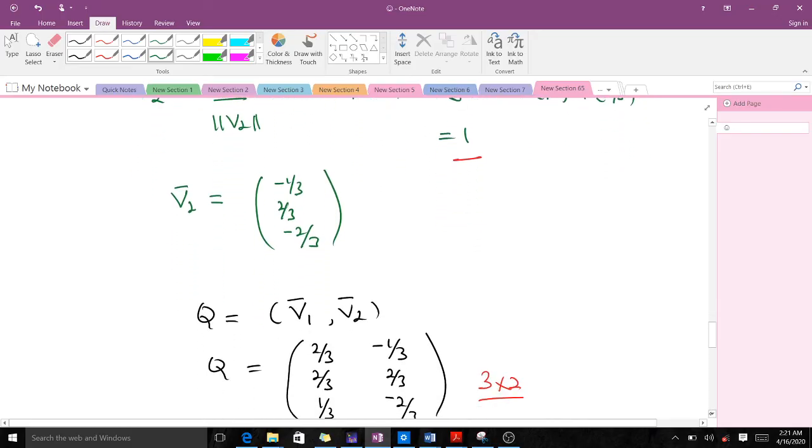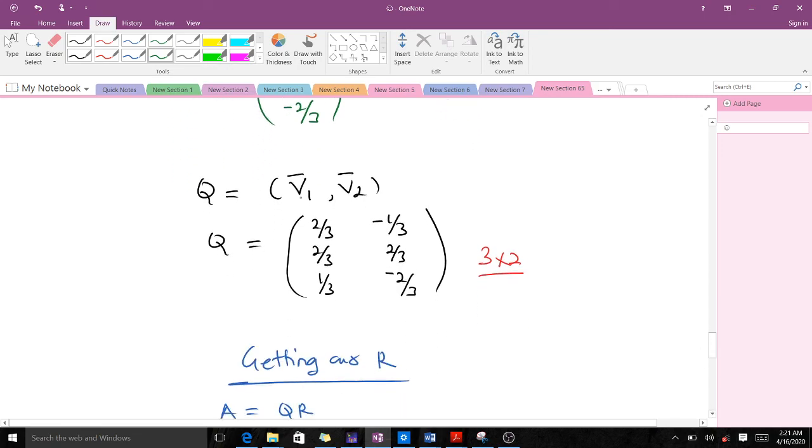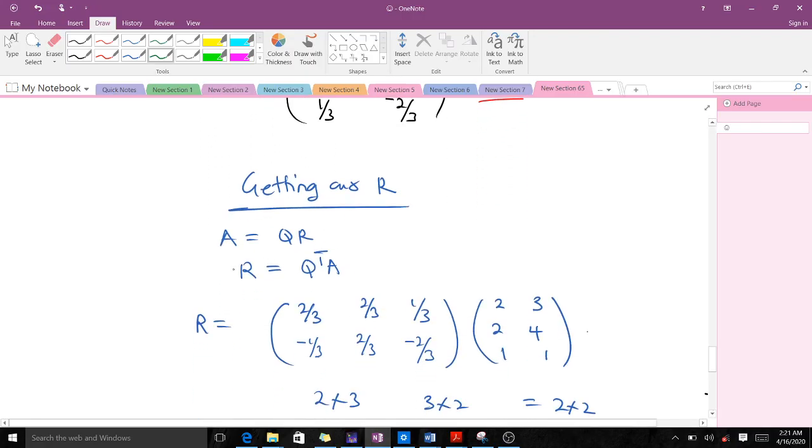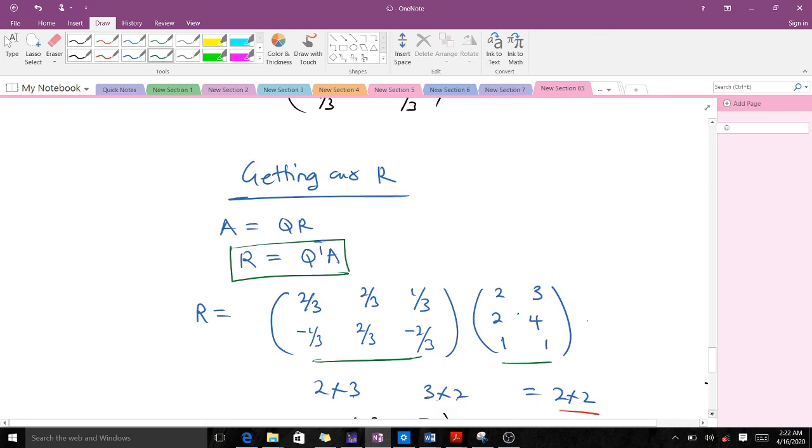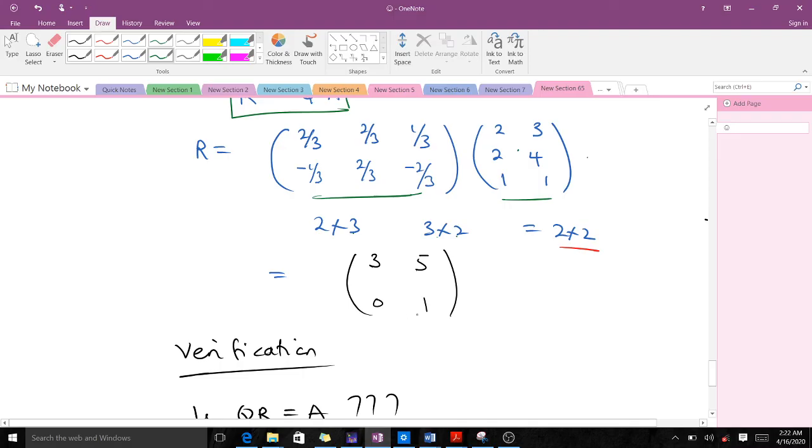We can form our Q matrix, which is our orthogonal matrix. It is V1 bar and V2 bar. You realize it is 3 by 2, same dimension as our A matrix. Now how to get our R? We said our R is given by the formula R equals Q transpose A. This is the transpose of our Q matrix, and this is our A from the original question. Here we have 2 by 3 and this we have 3 by 2, so when you do this matrix multiplication you get 2 by 2. When you multiply these two you get this particular matrix which happens to be an upper triangular matrix.